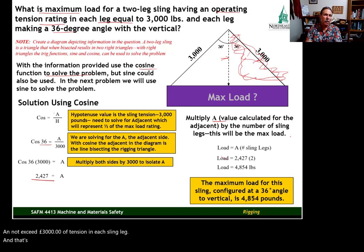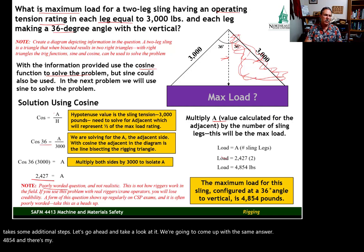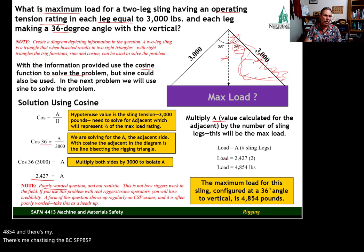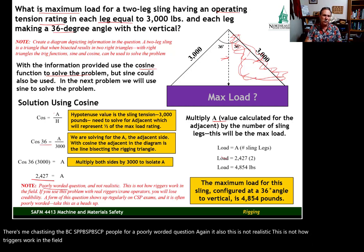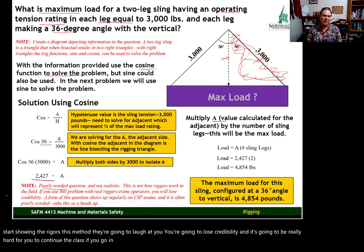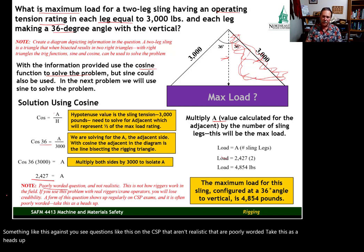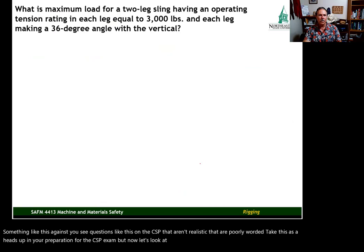Now let's look at the same problem using sine — we'll come up with the same answer of 4854. It's also worth noting that this type of calculation is not how riggers actually work in the field. If you went into a rigging class and showed riggers this method, you'd lose credibility quickly. You will see questions like this on the CSP that aren't realistic or are poorly worded, so take this as a heads up in your preparation for the CSP exam. Now let's look at the same problem using sine.